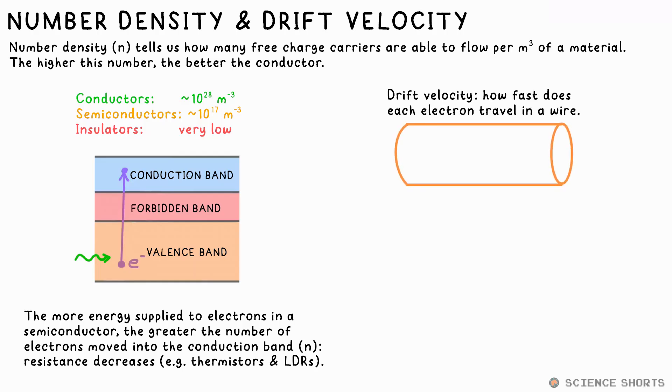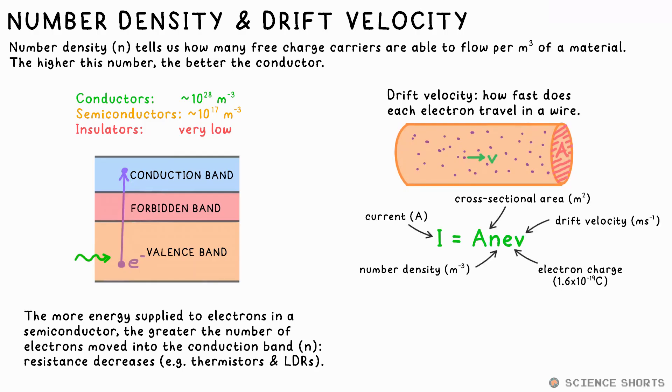Drift velocity is what we call the literal speed of electrons as they flow through the wire in meters per second. There's not really much point in knowing this, but here we go. The equation is this. Current is equal to cross-sectional area times number density times charge of an electron times drift velocity. We can then rearrange this for V if needed.